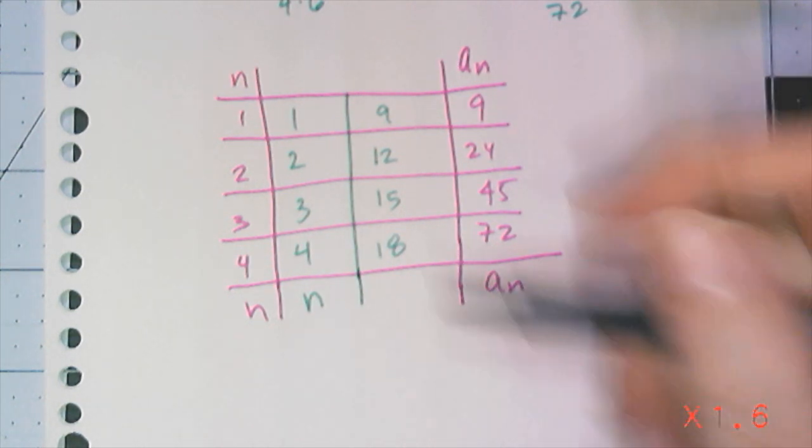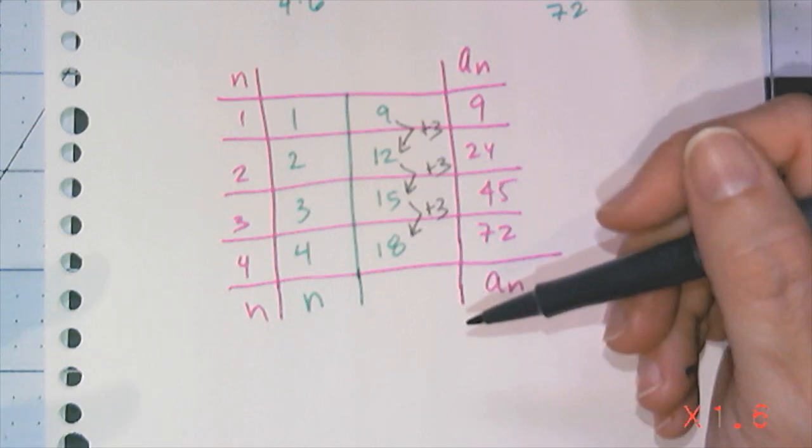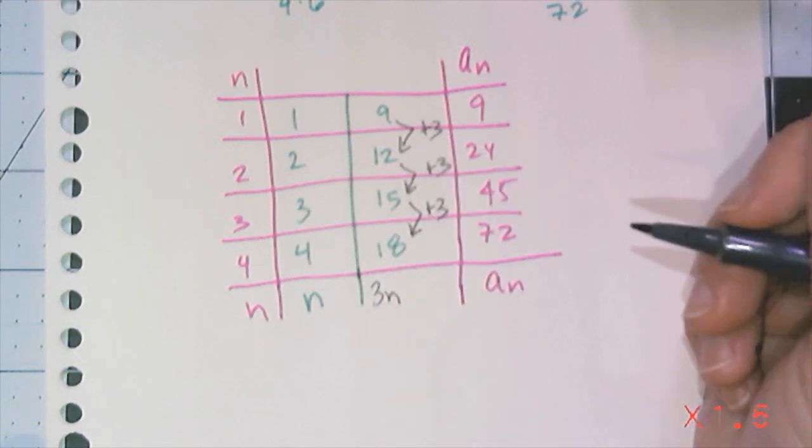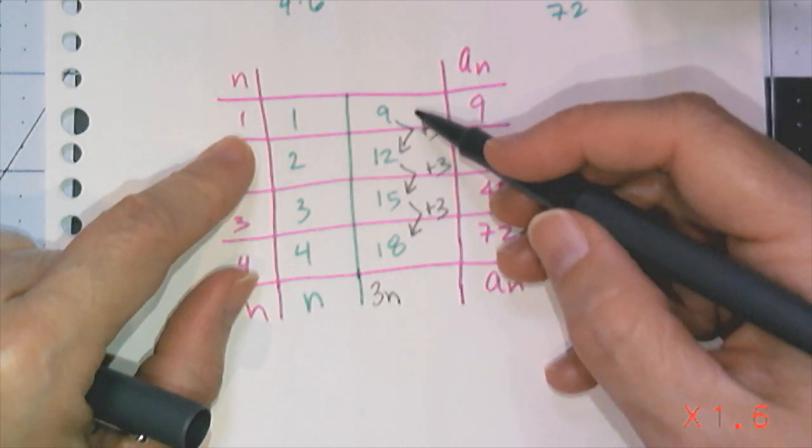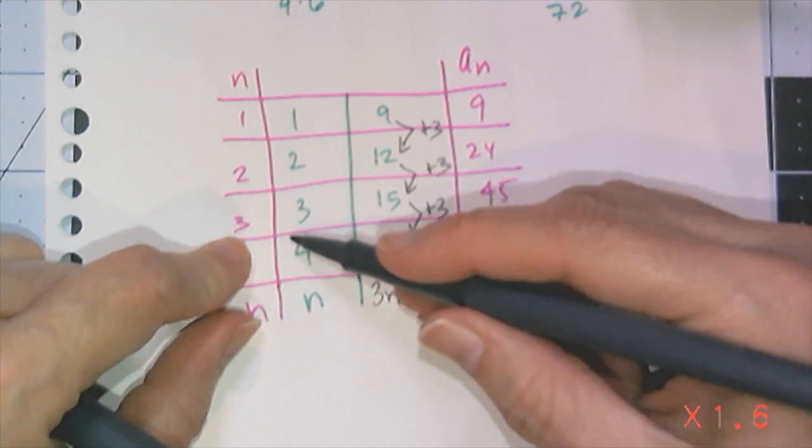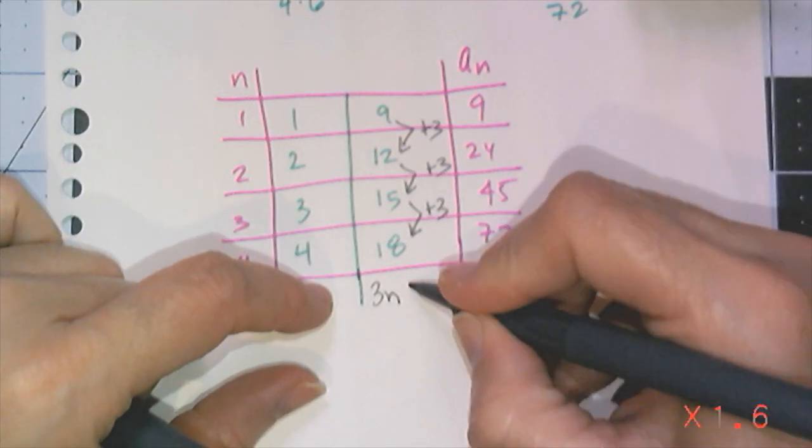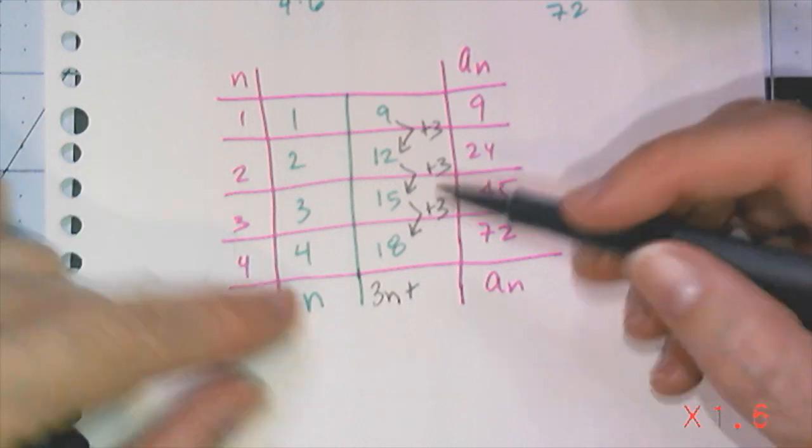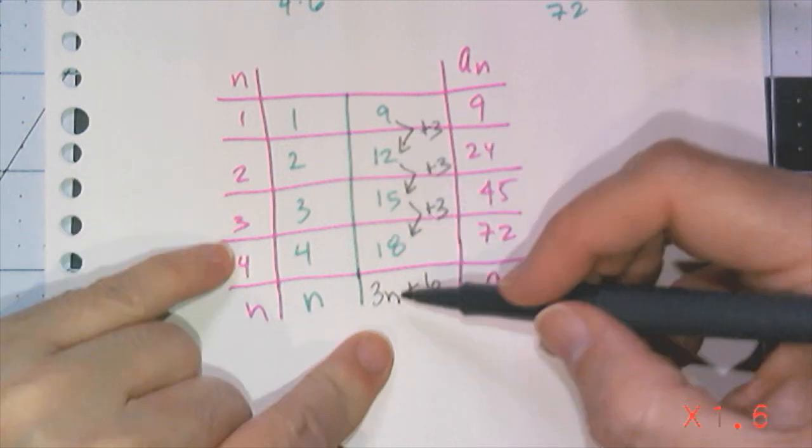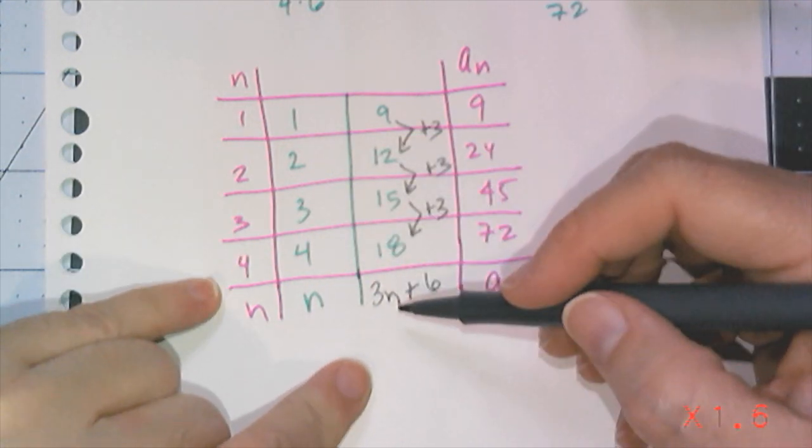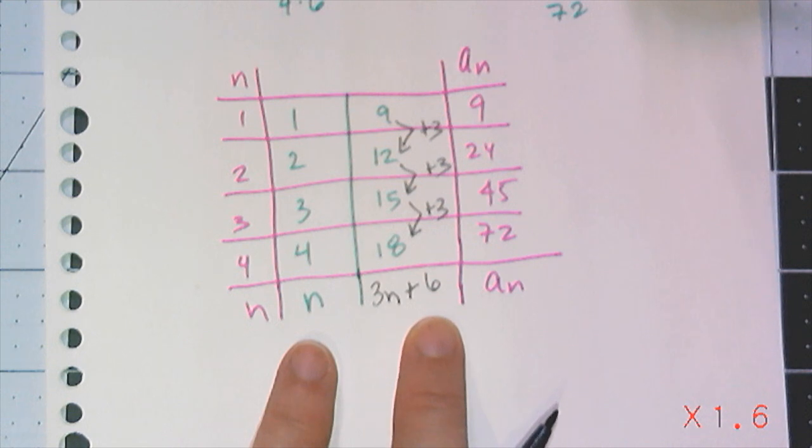And I know it's linear because I'm adding 3 each time. So that means my rule has a slope of 3. So I know it's 3n. But 3n doesn't work, right? Because 3 times 1 is 3, not 9. 3 times 2 is 6, not 12. 3 times 3 is 9, and not 15. But I notice that if I add something, I can make it work. So 3 times 1 is 3 plus 6 gives me 9. 3 times 2 is 6 plus 6 is 12. 3 times 3 is 9 plus 6 is 15. 3 times 4 is 12 plus 6 is 18. That means that this one is 3n plus 6.